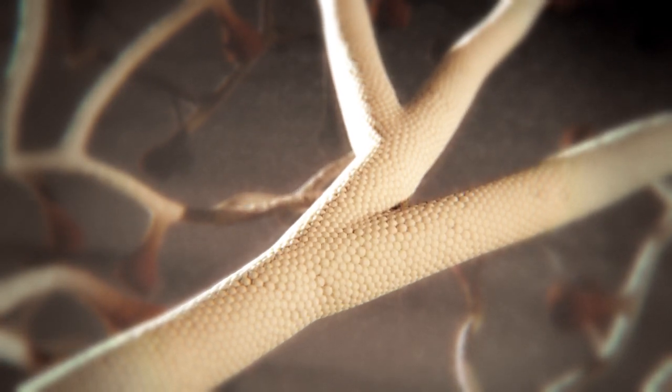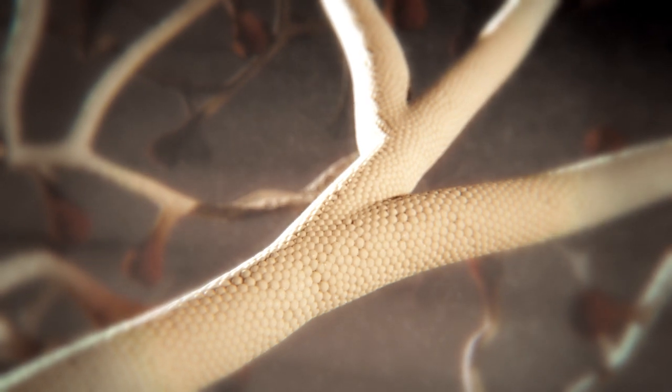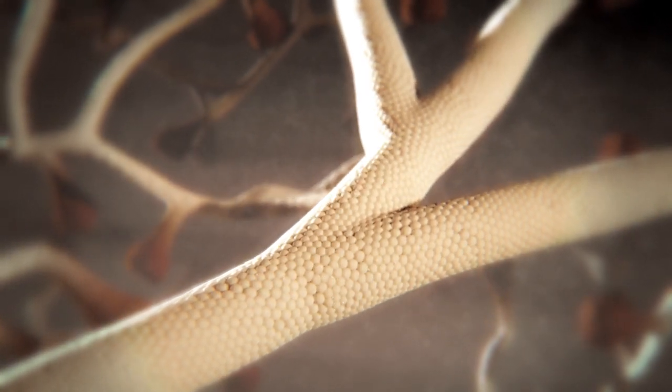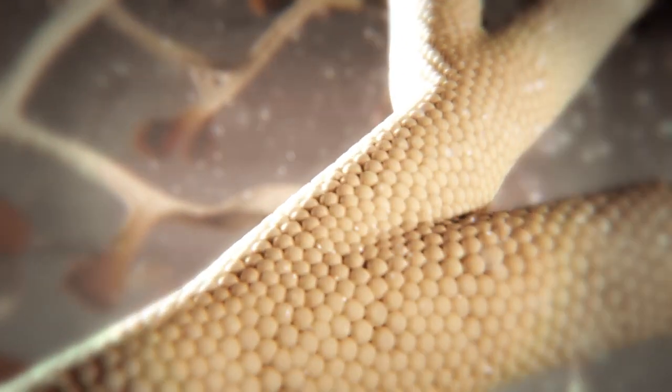In mice, islets start forming around the 13th day of pregnancy. At this time, the core of the developing pancreas is a network of epithelial tubes or cords.